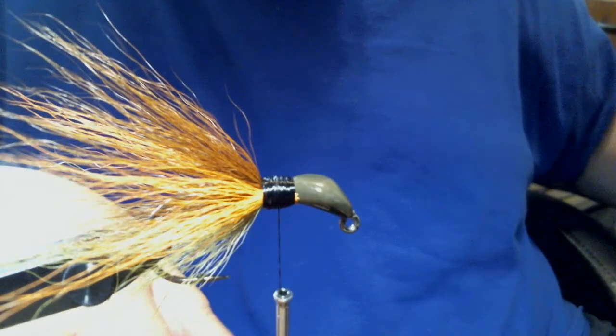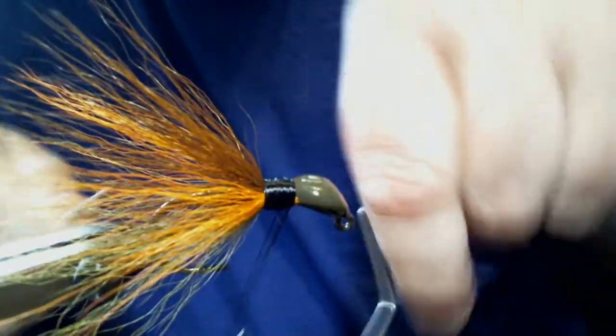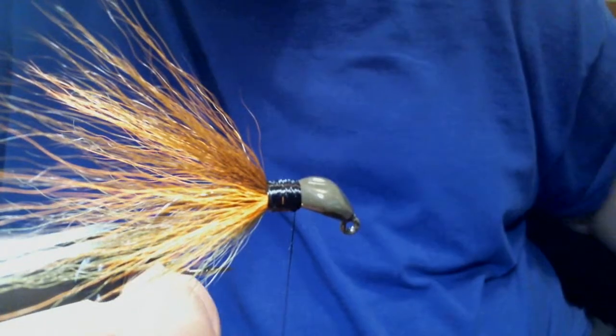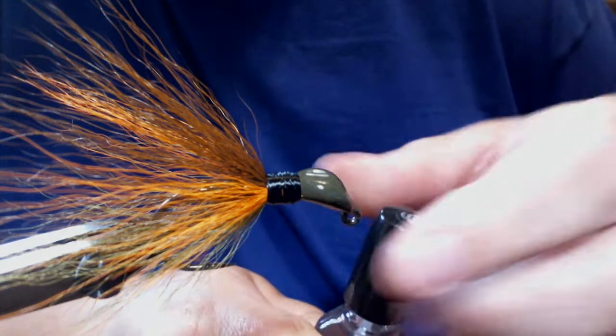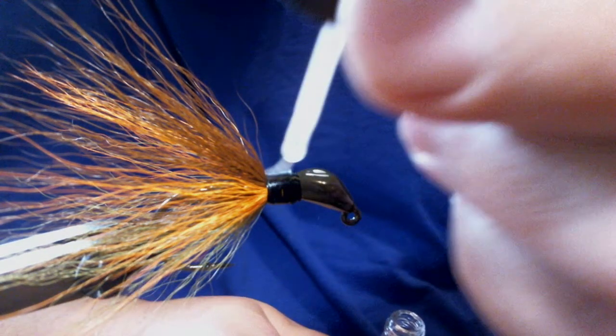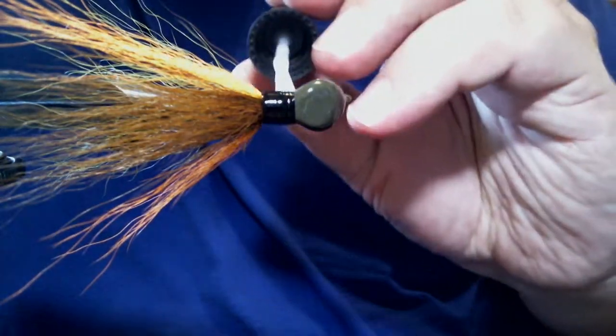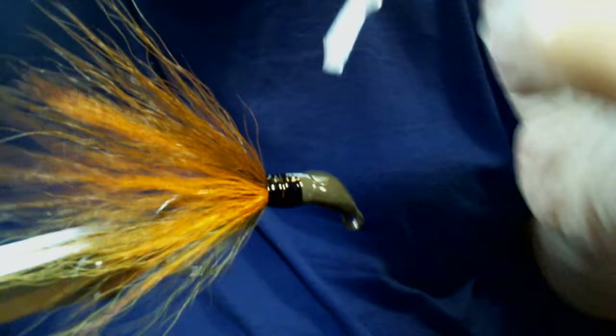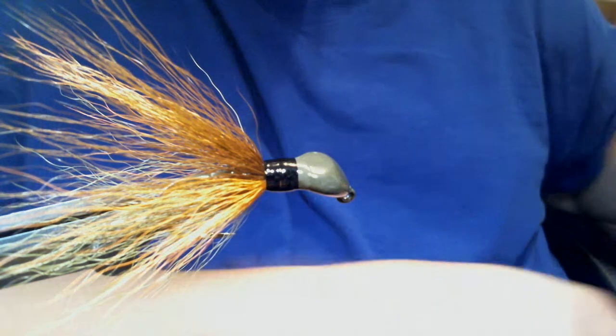Whip finish. Five, six. Cinch it. Again. Six. Trim it. Some Sally Hansen's. Hard as nails. All the way around. And we're just about done.